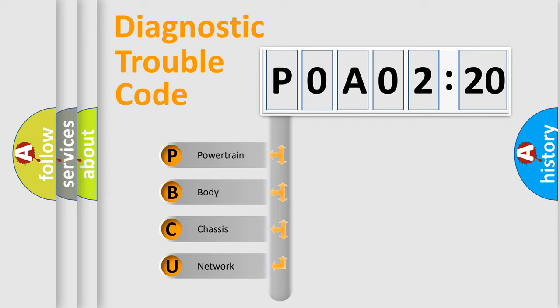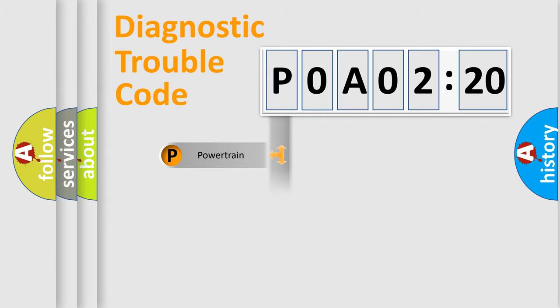We divide the electric system of an automobile into four basic units: Powertrain, Body, Chassis, and Network.